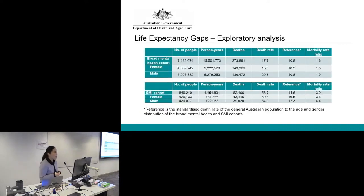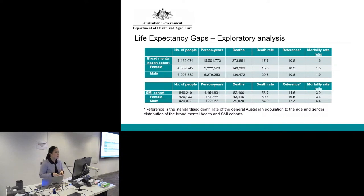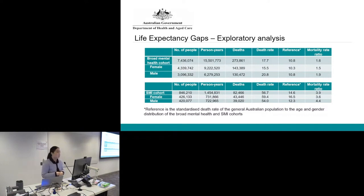In terms of preliminary results for the mortality rate ratio, for the broad mental health cohort, they are 1.6 times more likely to die than the general population — split by female and male. When we move on to the severe mental illness cohort, they are 3.9 times more likely to die than the general population, again split by females and males.